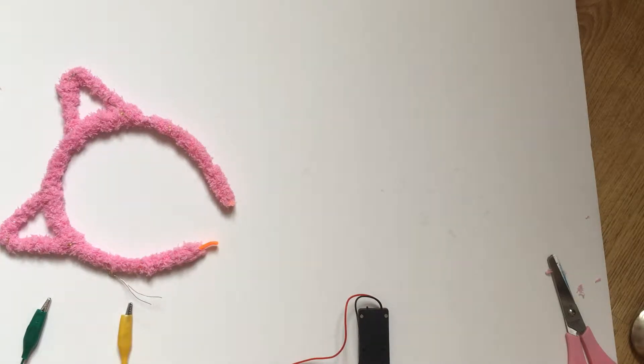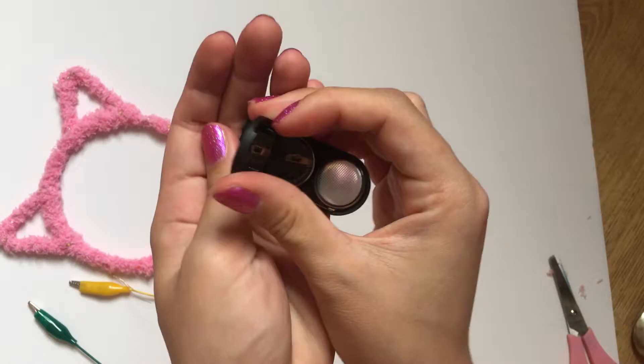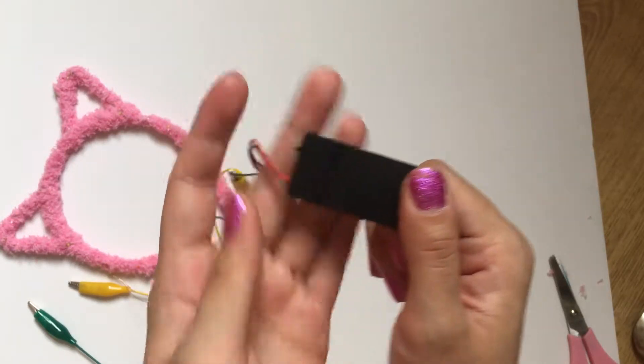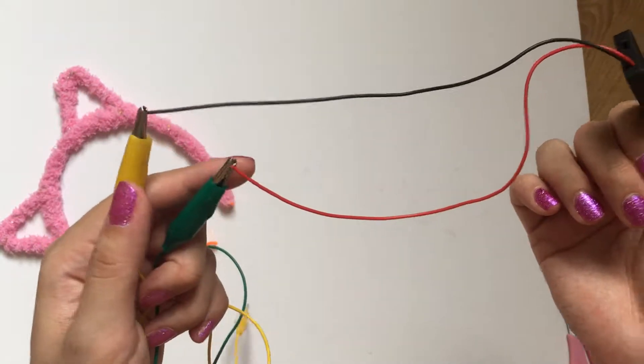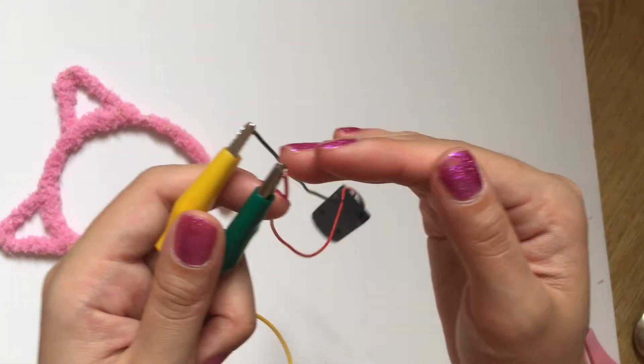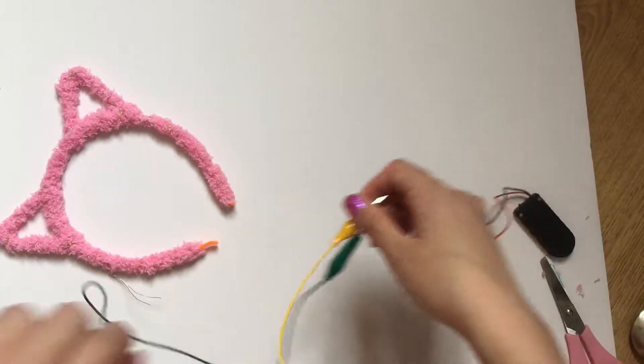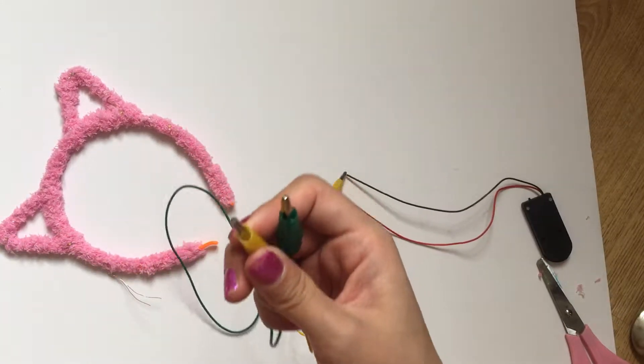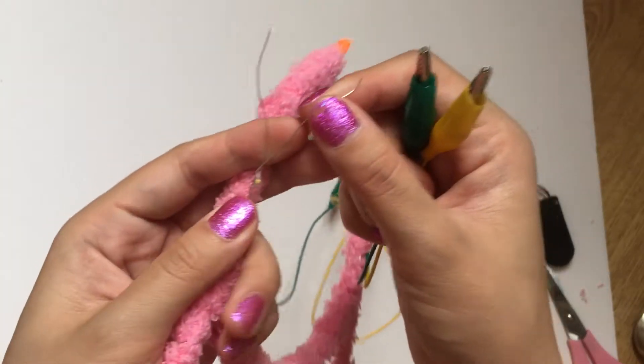So to show you how to use it, first of all, insert some coin cell batteries into your coin cell holder, attach one end of the crocodile clips to the battery holder, and now attach the other end of the crocodile clips to the LED string.